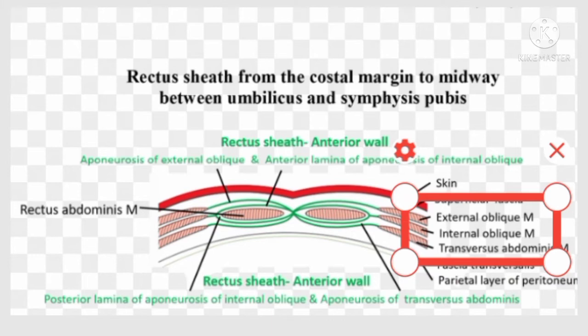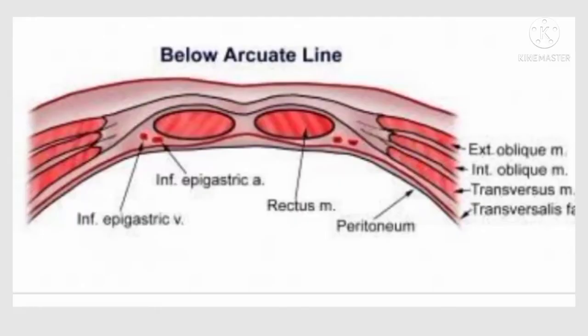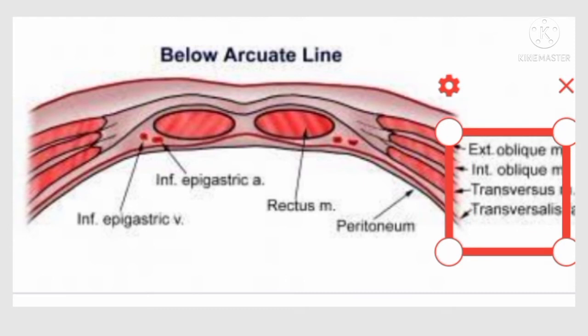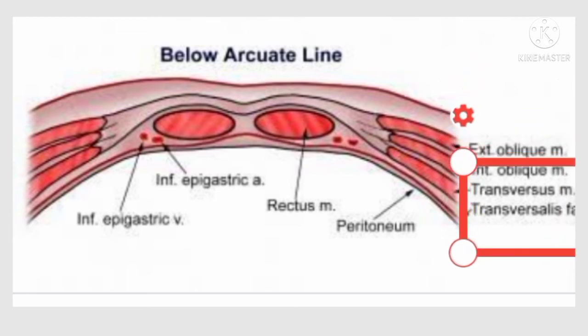Now we will discuss about the formation of the rectus sheath below the arcuate line. The anterior wall below the arcuate line is formed by the aponeurosis of all three flat muscles: the external oblique muscle, internal oblique muscle, and transversus abdominis muscle. As you can see in the figure, the aponeuroses of the transversus abdominis and internal oblique muscles are fused, but the external oblique aponeurosis remains separated. The posterior wall of the rectus sheath below the arcuate line is deficient and the rectus muscle rests on the fascia transversalis, as you can see in the figure.